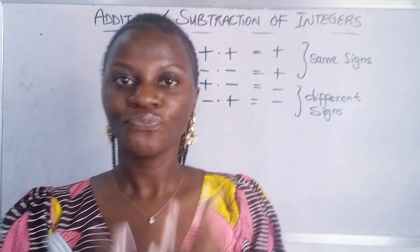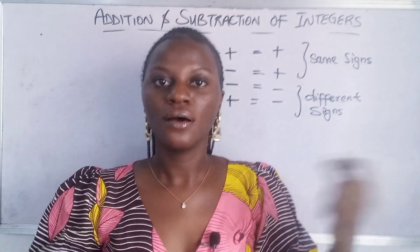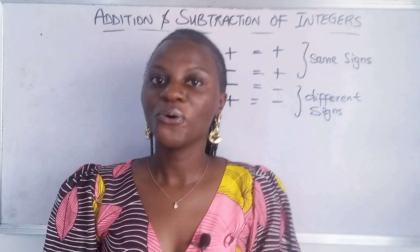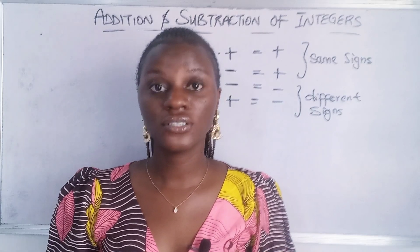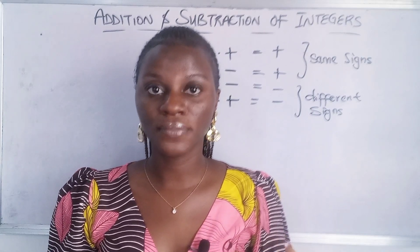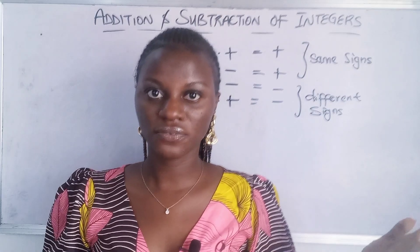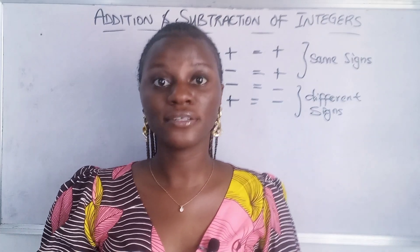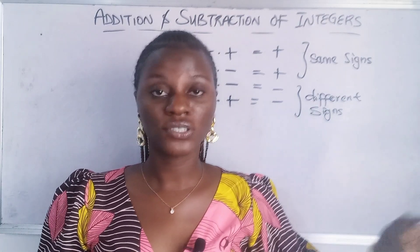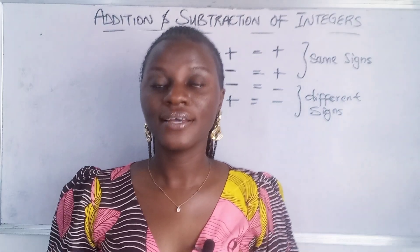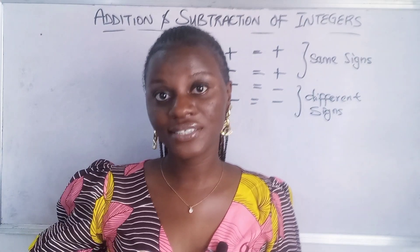Now we can dive into adding and subtracting integers. What are integers? Integers are numbers ranging from negative to positive — you have minus two, minus three, plus two, plus three, and so on. They are numbers from the negative side of the number line to the positive side.